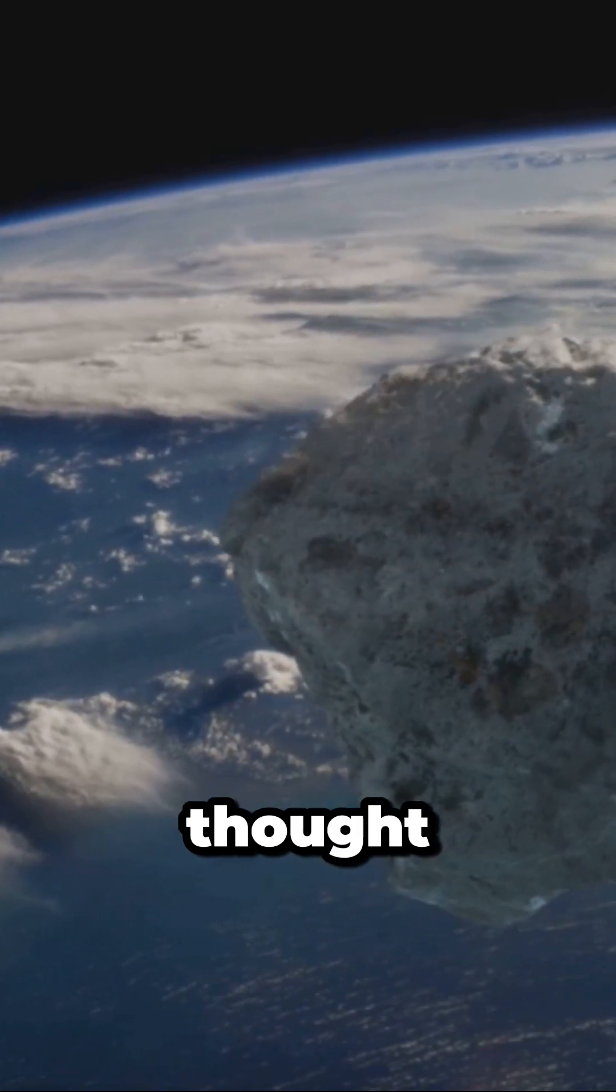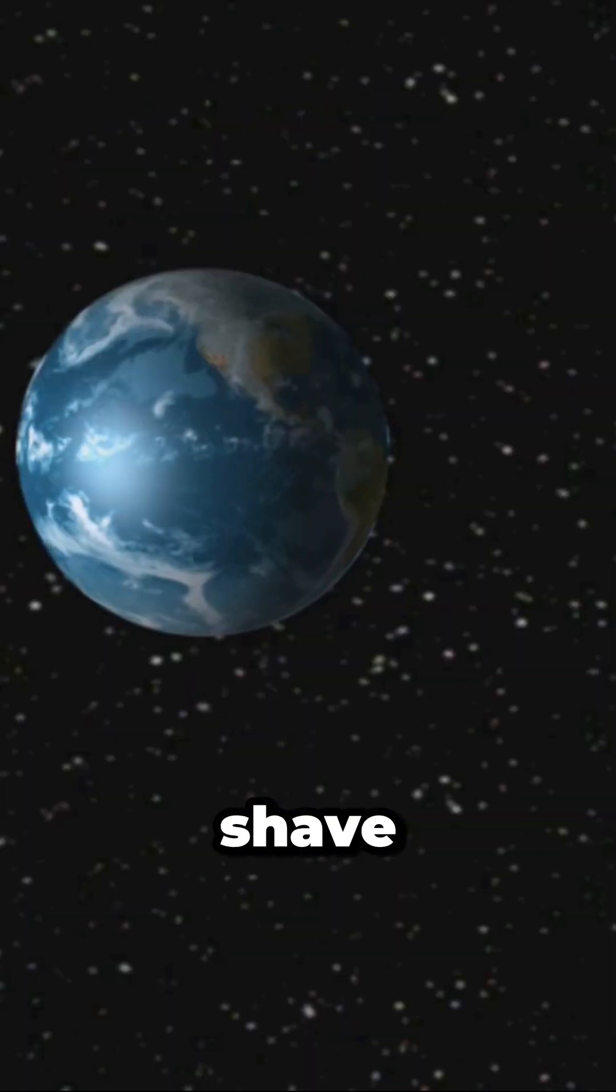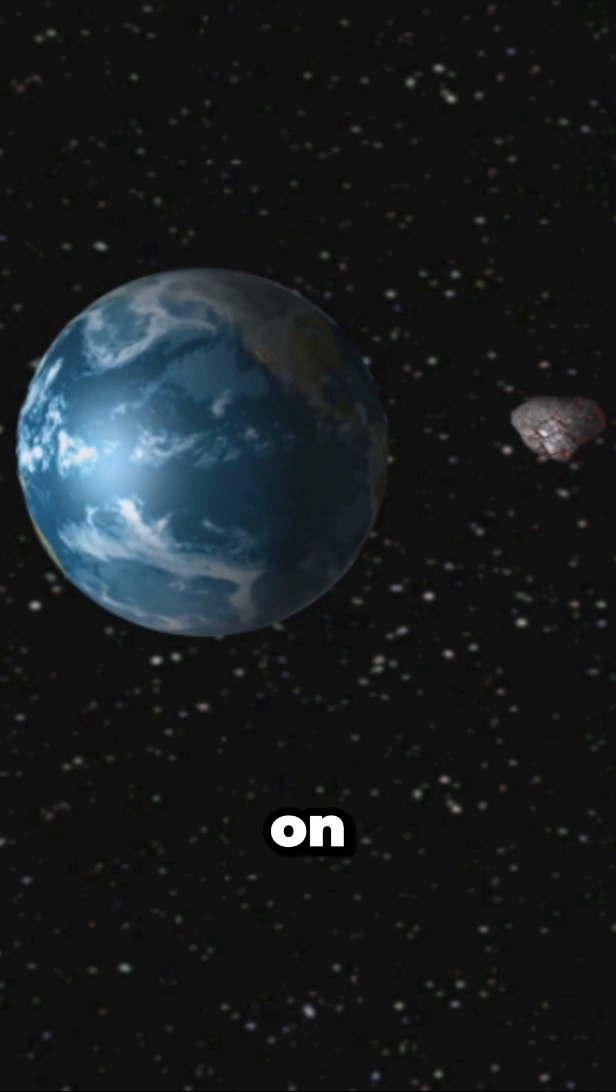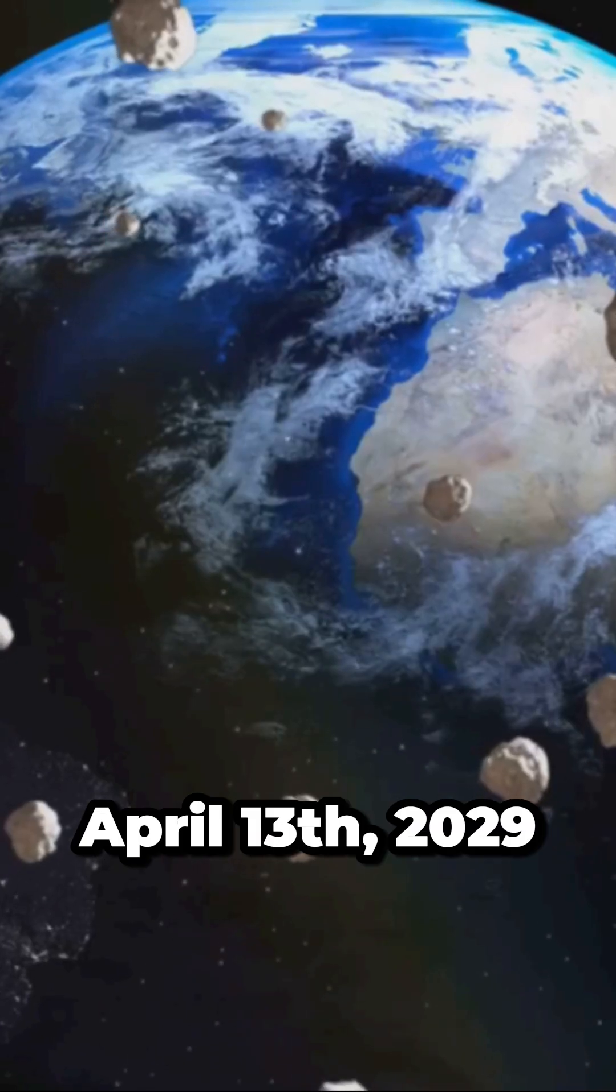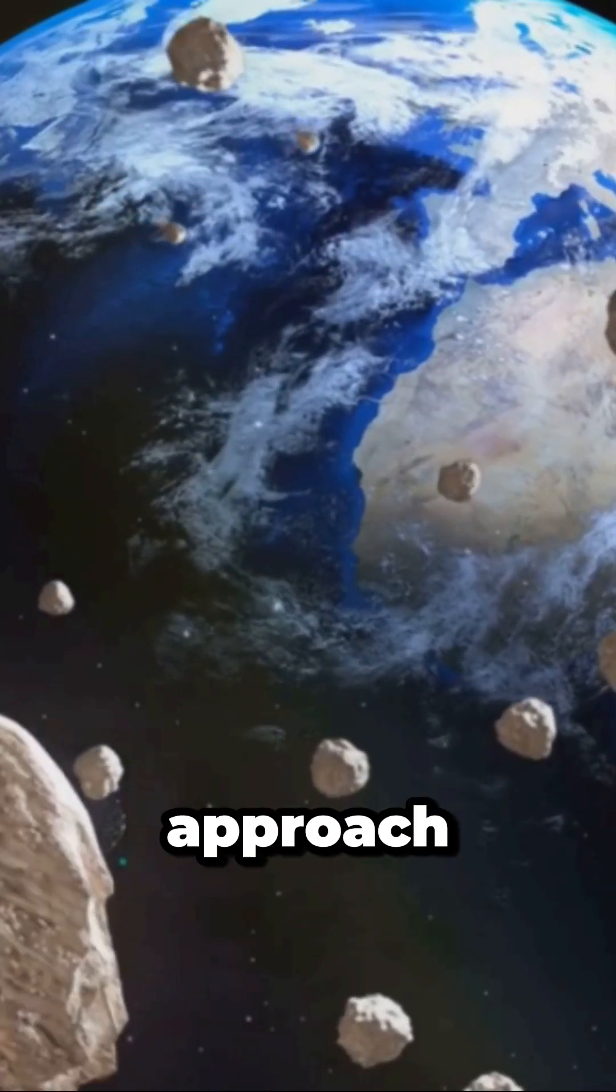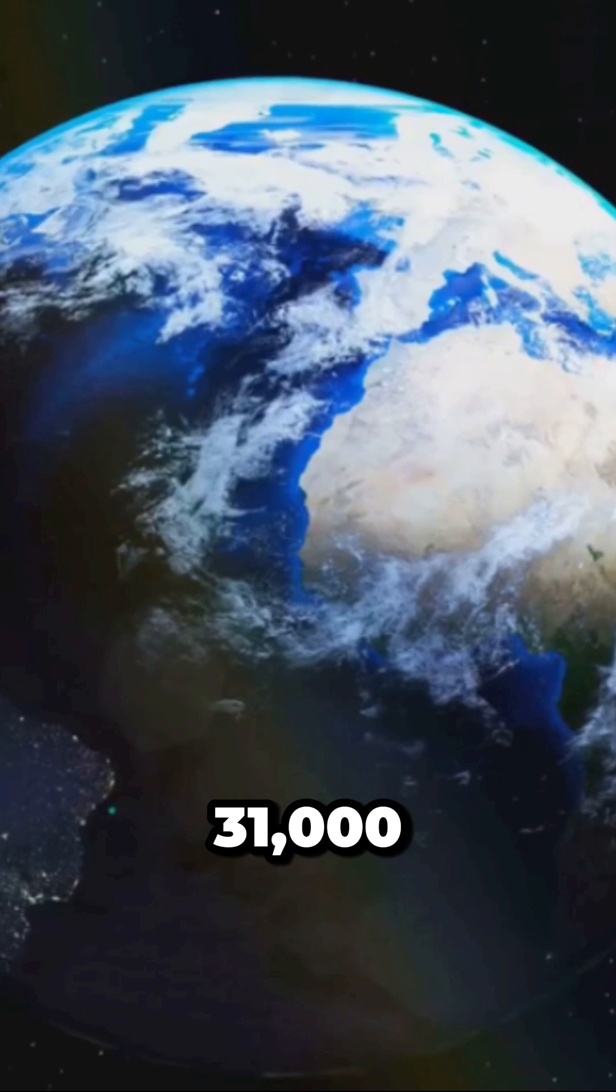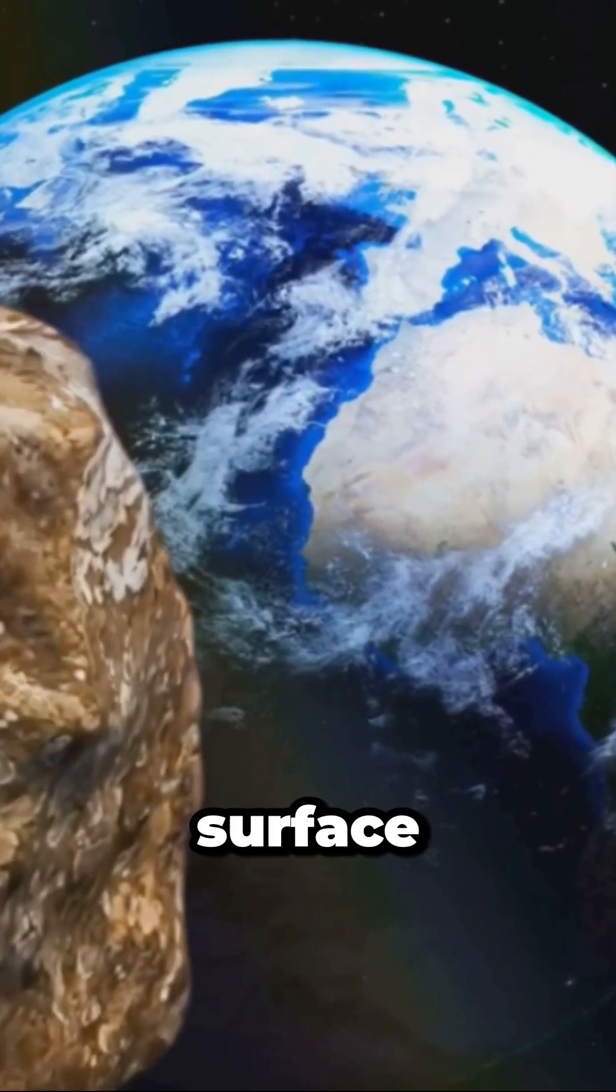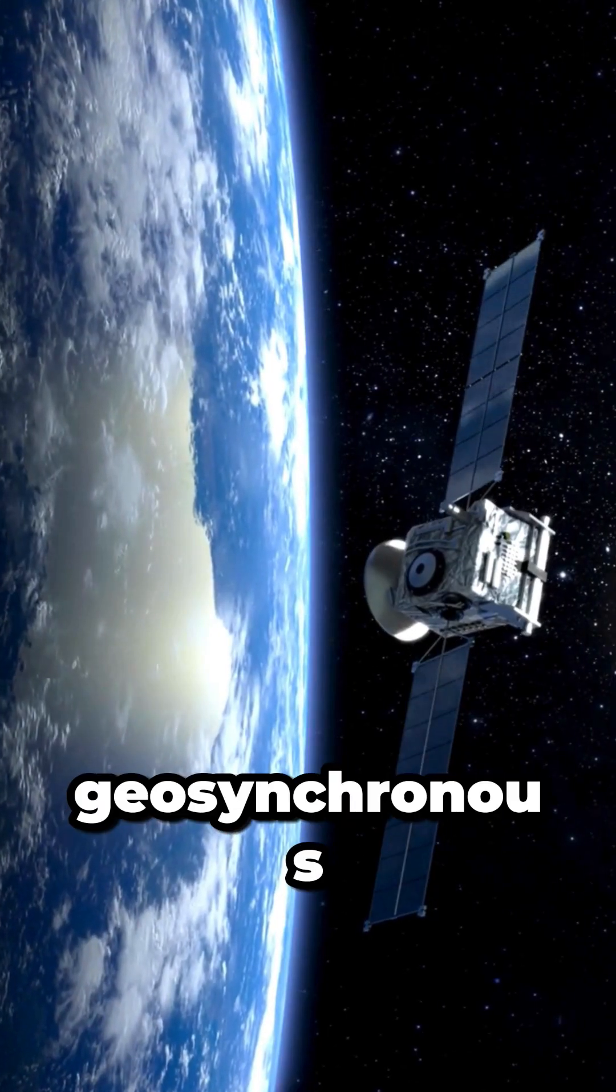Originally, experts thought 2029 was going to be the year, a close shave with Earth. And guess what? On April 13th, 2029, Apophis will make a close approach, skimming past us at about 31,000 kilometers from our surface. That's closer than some of our geosynchronous satellites.